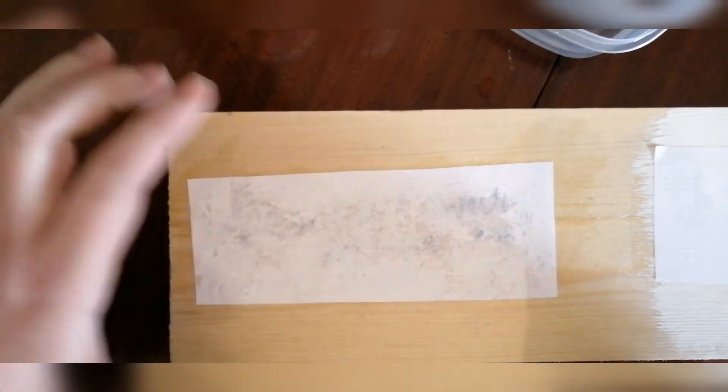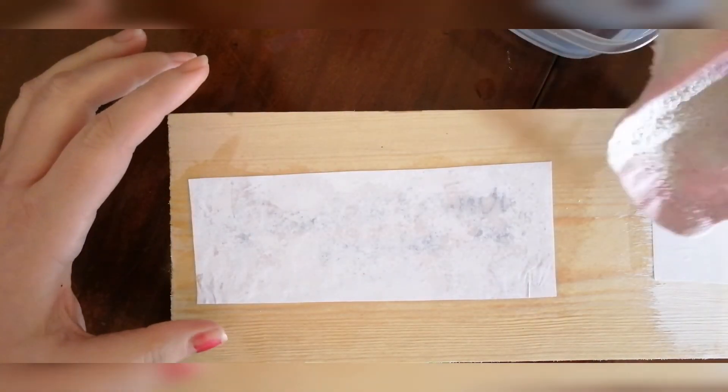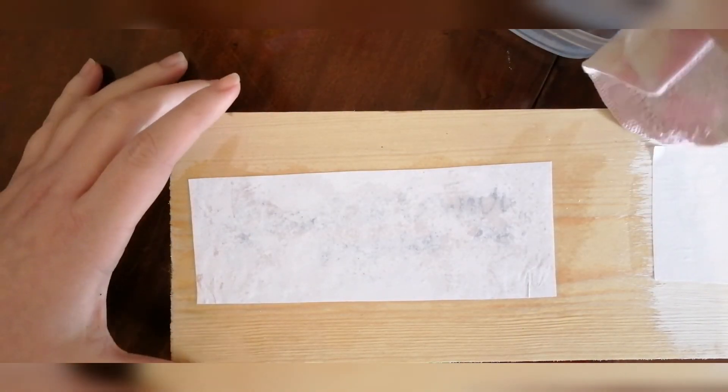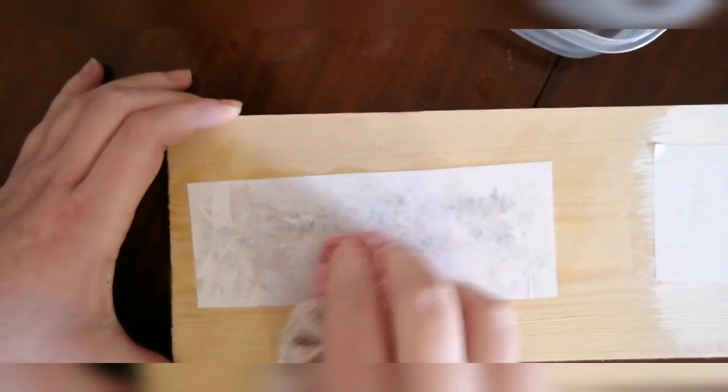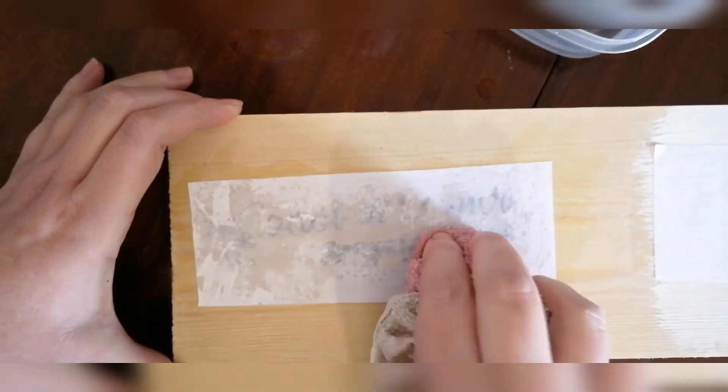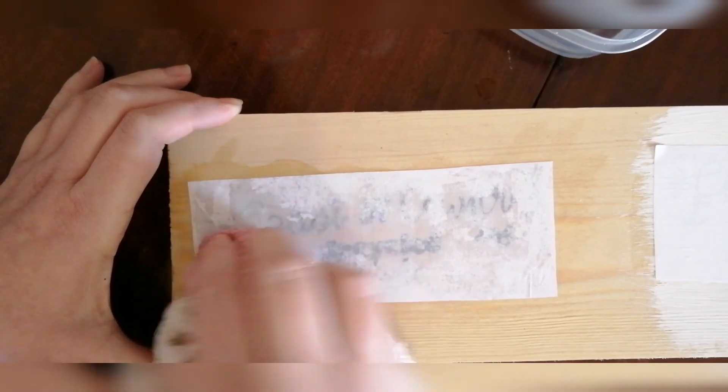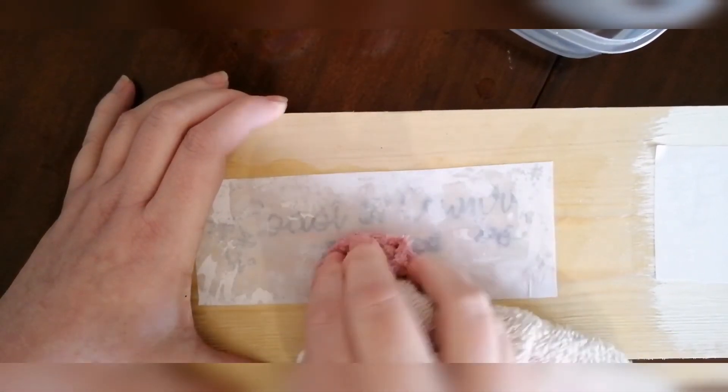Now as you can see once the paper starts to soak up the water your image will start to show through the paper and that is letting you know that you are putting the right amount of water on. Now as I said before you do not want to completely soak this paper here you just want to get it nice and light and wet and then you can begin the rubbing process.